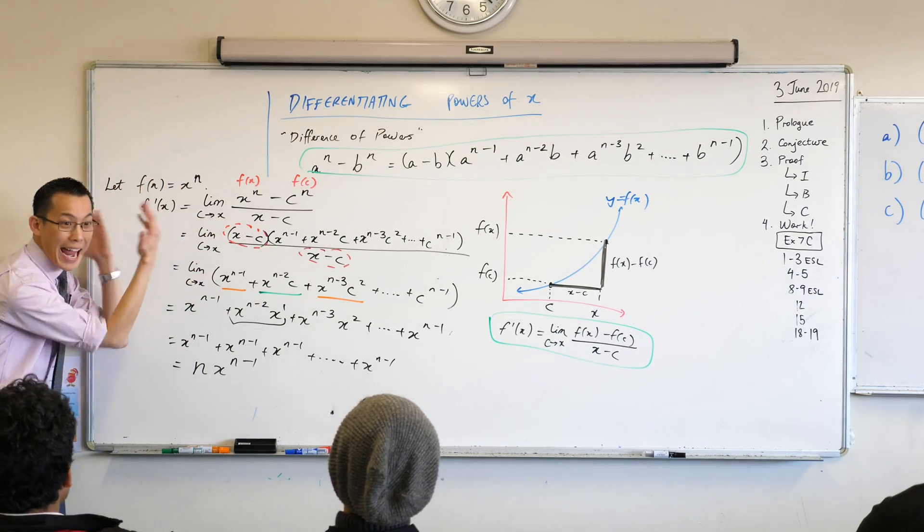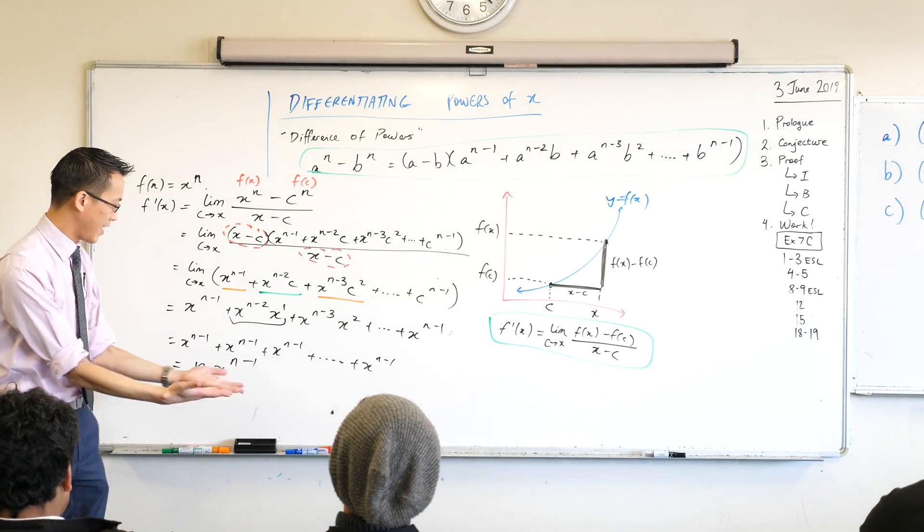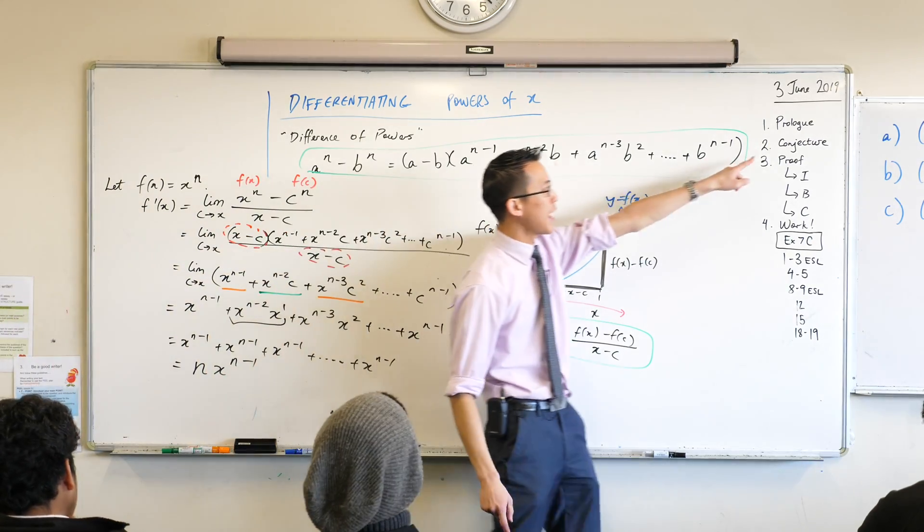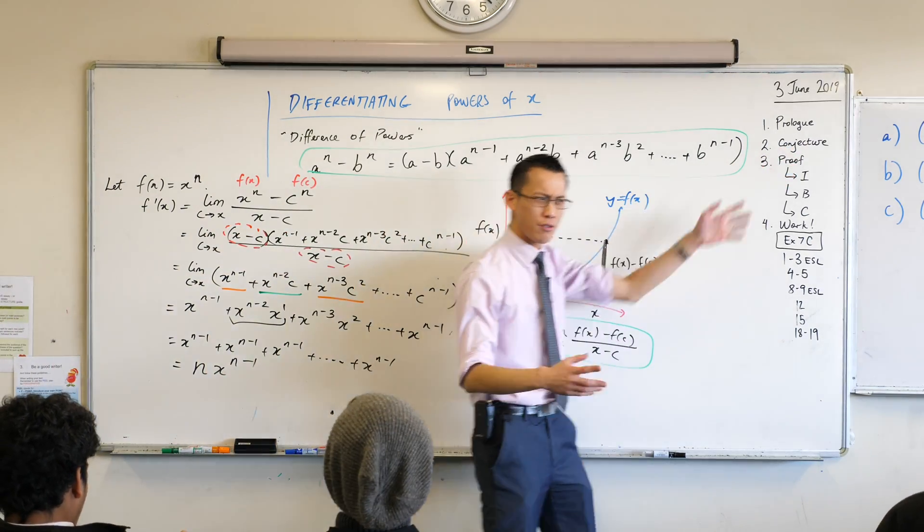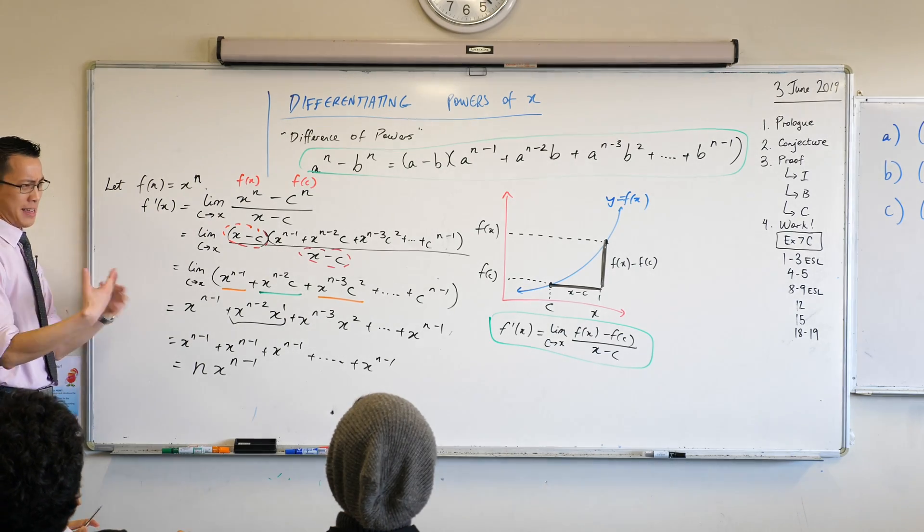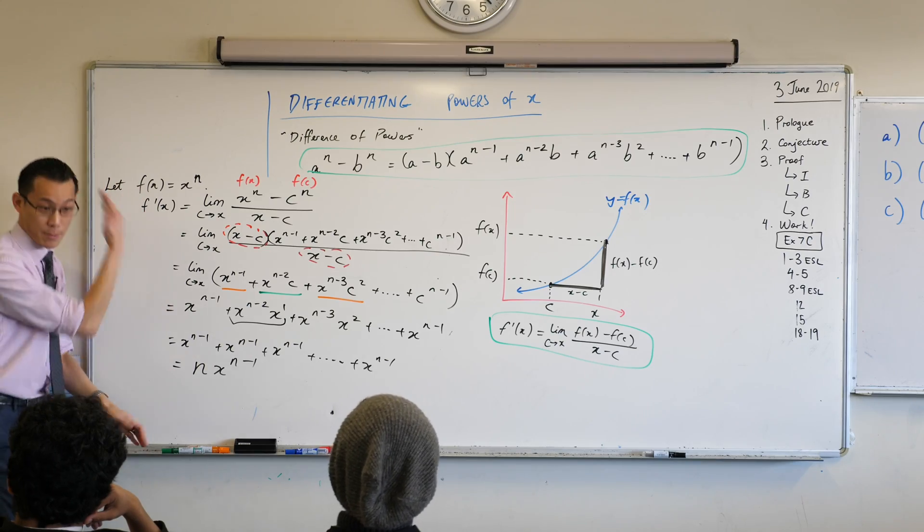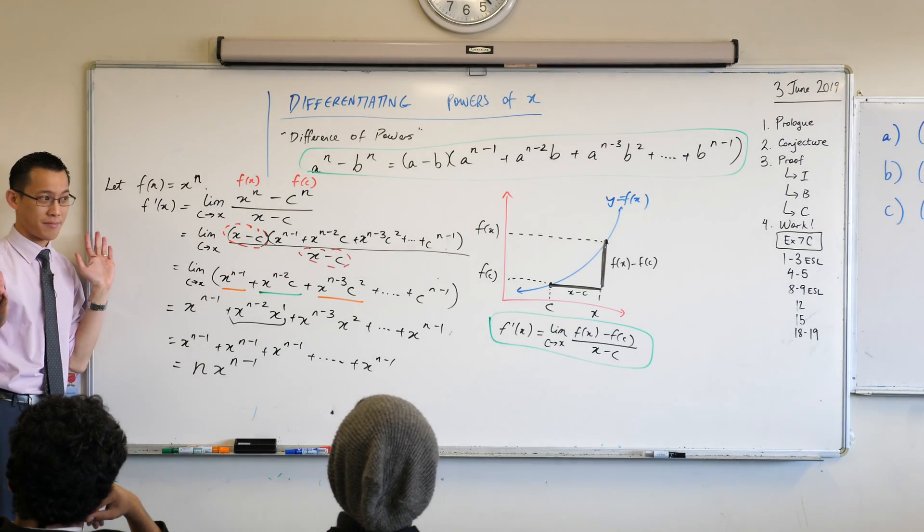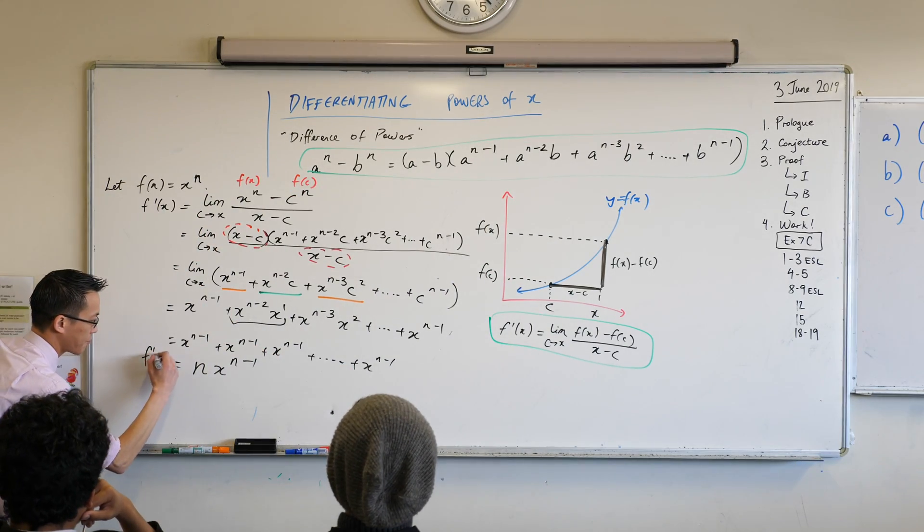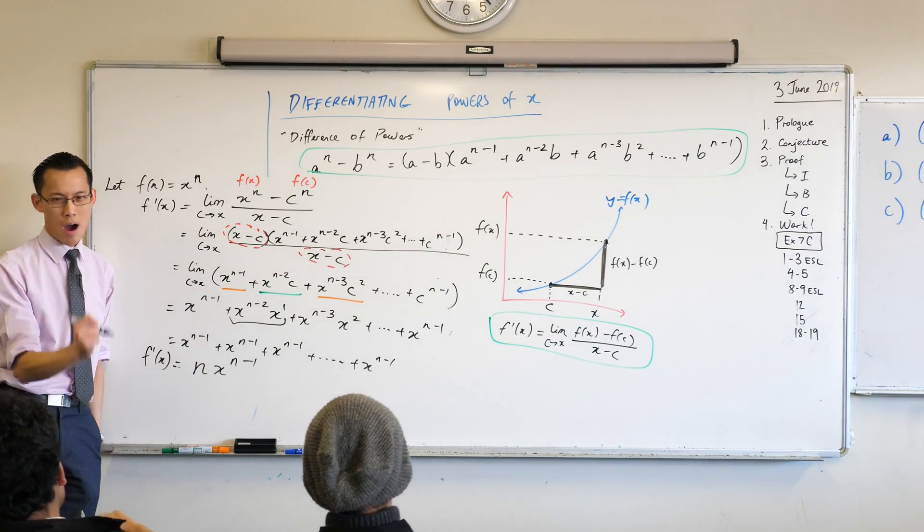Yikers. For any power of x, you never need to use first principles again. You can just use this. We've just established we have proved our conjecture. Not through like, I think I saw it happen a lot of times. It seems to be a pattern. Right? This is not just I seem to see a pattern over and over again. It's proof. It's true forever. So this is our f'(x). This is our rule that we thought was true before, but now we know it's true and we know why.